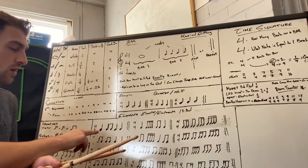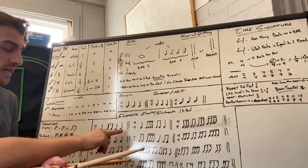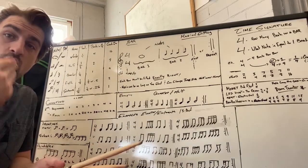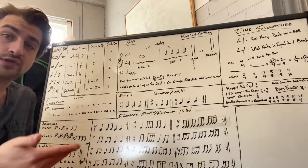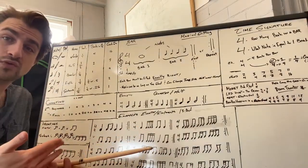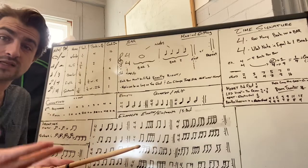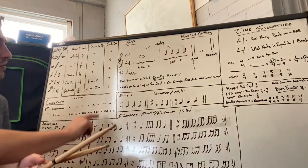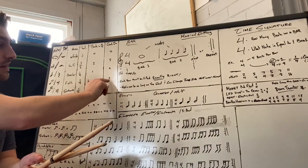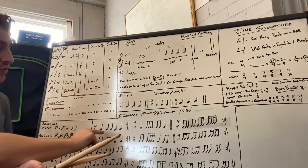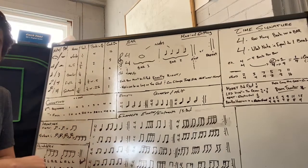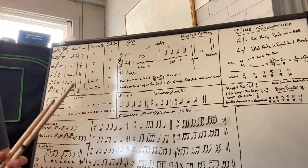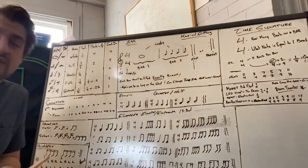As you move on to eighth notes, they move faster — you're getting less counts, so more hits in a bar. As we know, the quarter notes each get four counts and the eighth notes get two counts each. So we're going to try exercise number one — I'll play this twice and see if you can follow along.